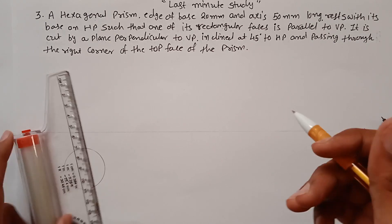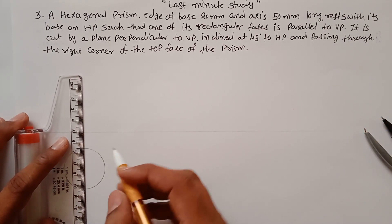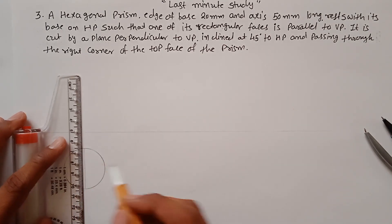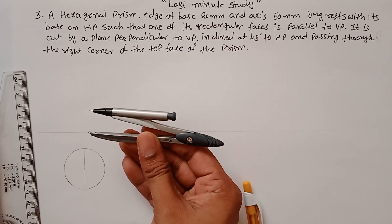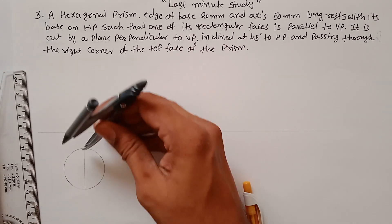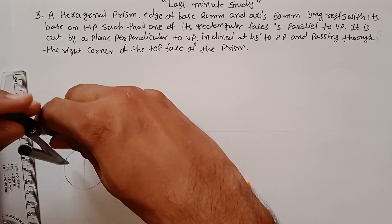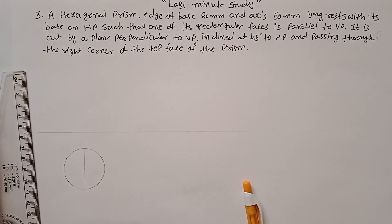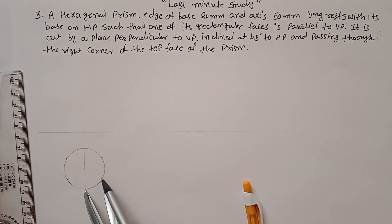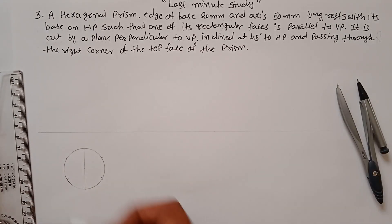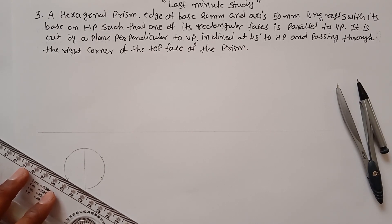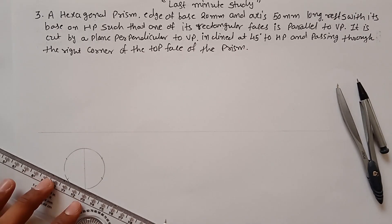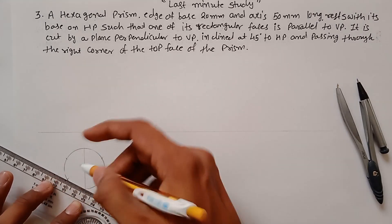Draw a vertical line passing through the center. From the top point, maintain the radius of 20mm and draw arcs on the circle on both sides. From that point, also mark points on the other side. This gives you all six hexagonal corner points. Join them to get your hexagon with 20mm sides.